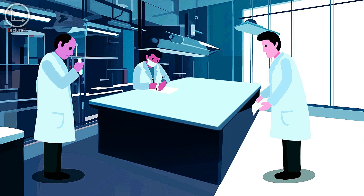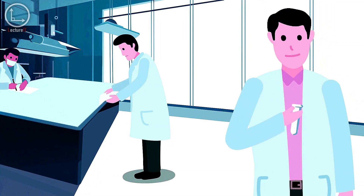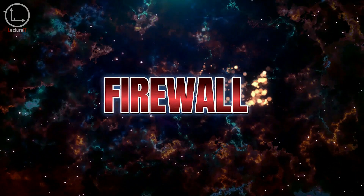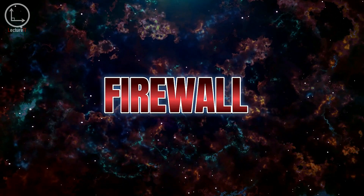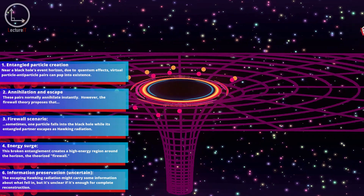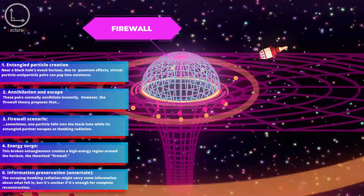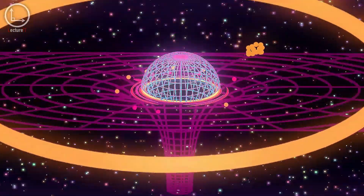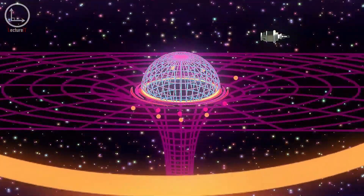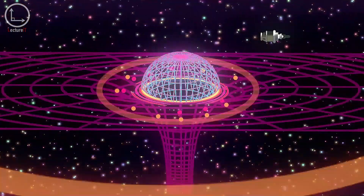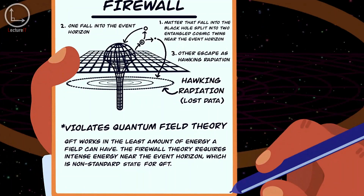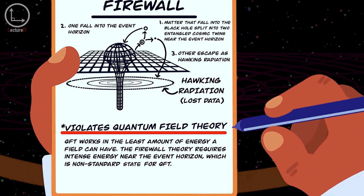Let's take a look at some promising candidates vying to resolve the paradox. Many scientists believe that firewalls might hold the answer. A firewall consists of a highly energetic membrane situated near the event horizon, annihilating anything attempting to traverse it. Proponents argue that this barrier safeguards the integrity of information by ensuring that nothing escapes the black hole intact, thereby preventing any loss of data. Although elegant in its simplicity, this hypothesis faces stiff opposition due to its apparent violation of certain tenets of quantum field theory.